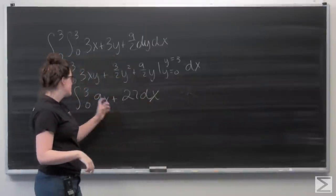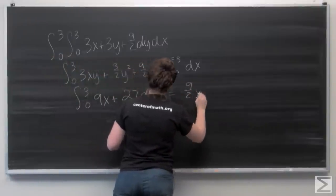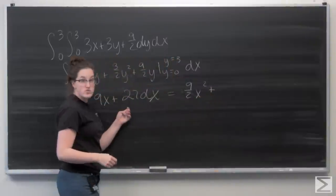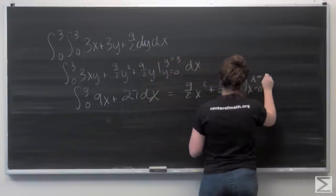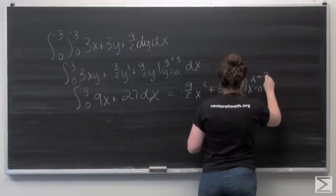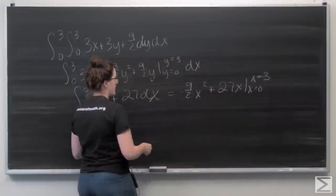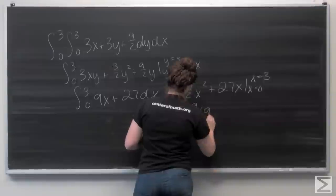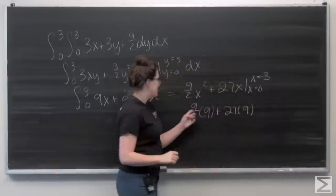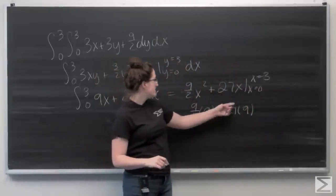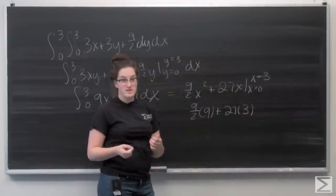And now I want to integrate with respect to x. So 9x is going to become 9 halves x squared, and 27 is going to become 27x. And let's evaluate from x equals 0 to x equals 3. So I'm going to plug in a 3 for every time I see an x. So I have 9 halves times 9 plus 27 times 3. And then when I plug in x equals 0, I just get 0.